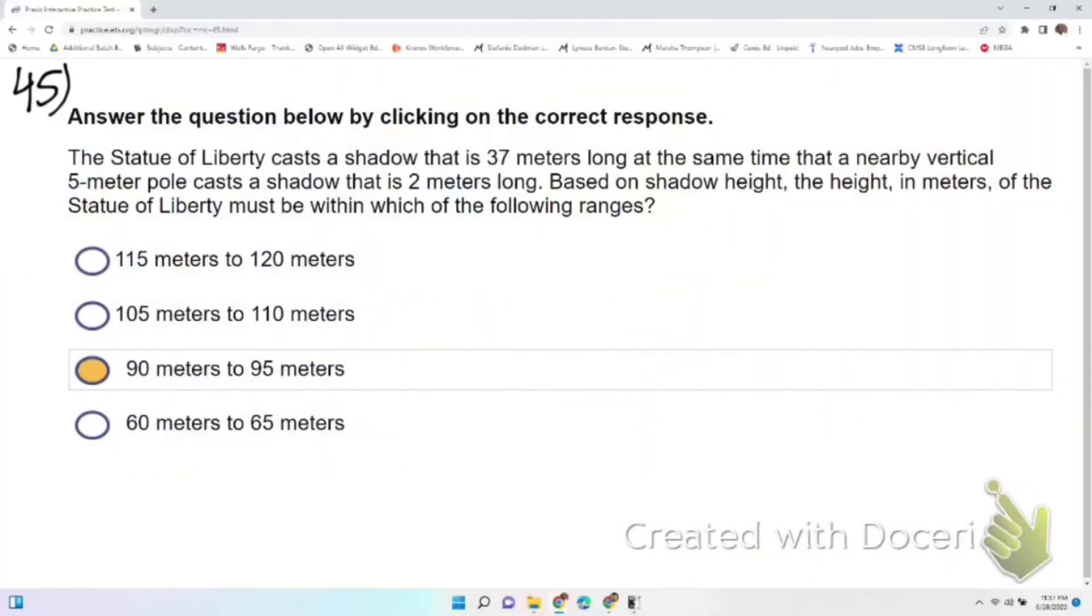Number 45: A Statue of Liberty casts a shadow that is 37 meters long, but we don't know what the height is. A five-meter pole, we know the height of that, five meters, has a shadow two meters long.